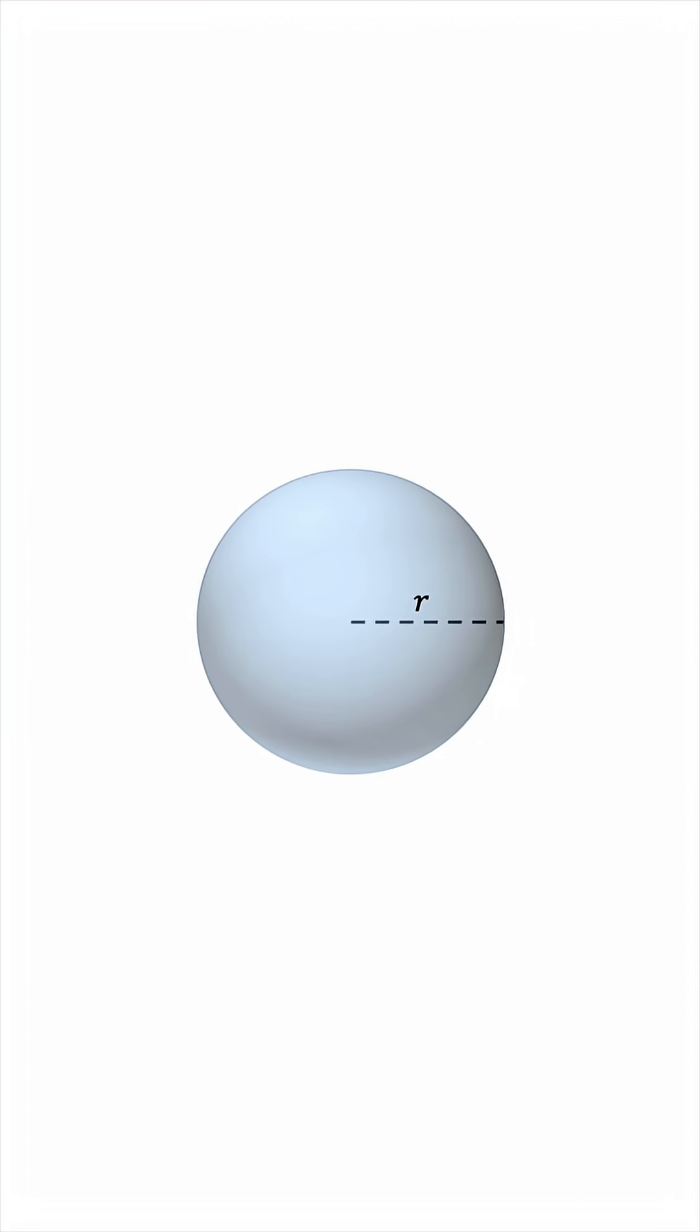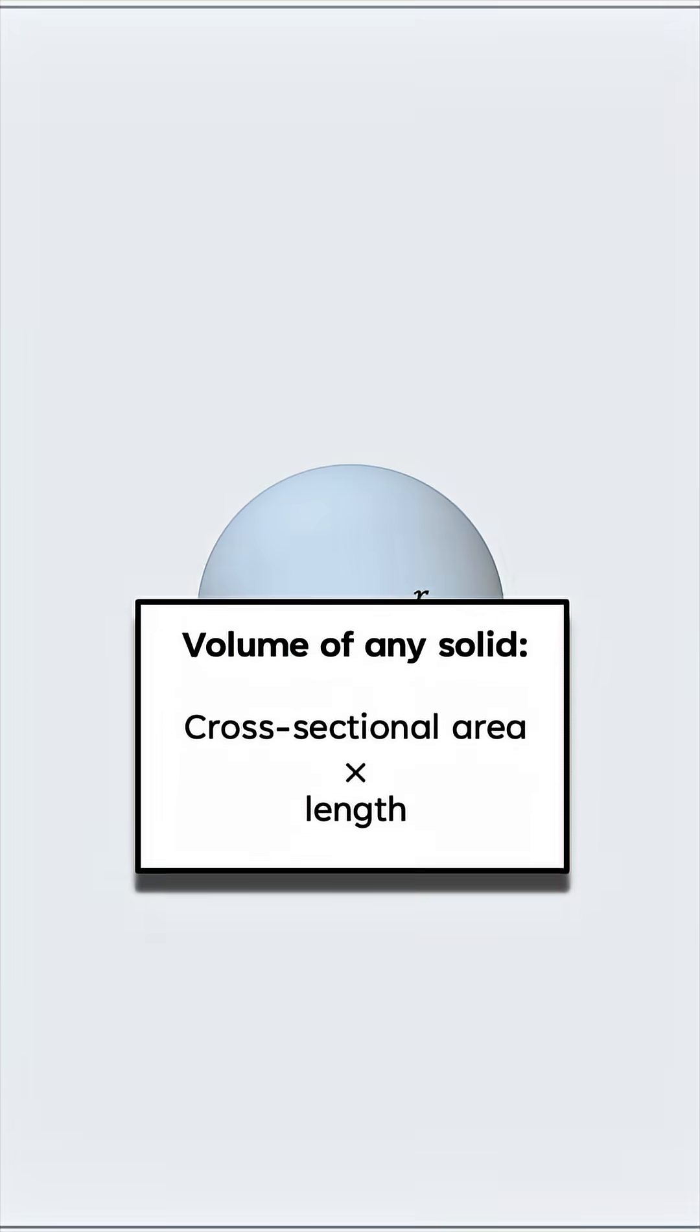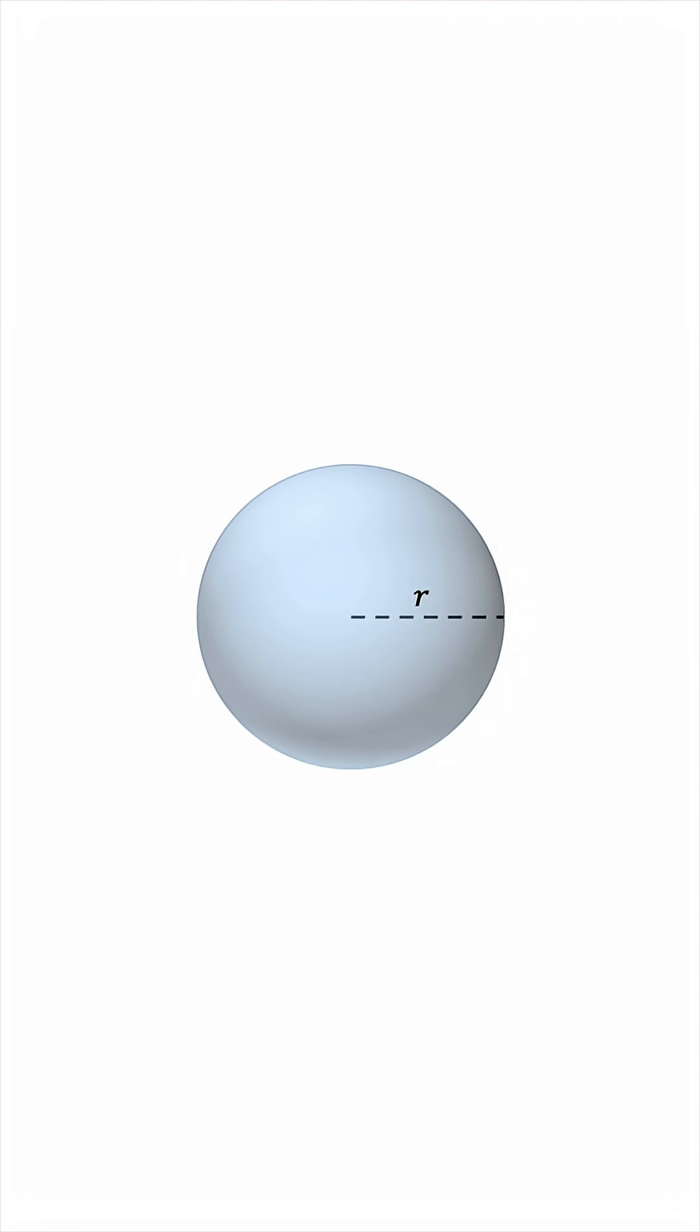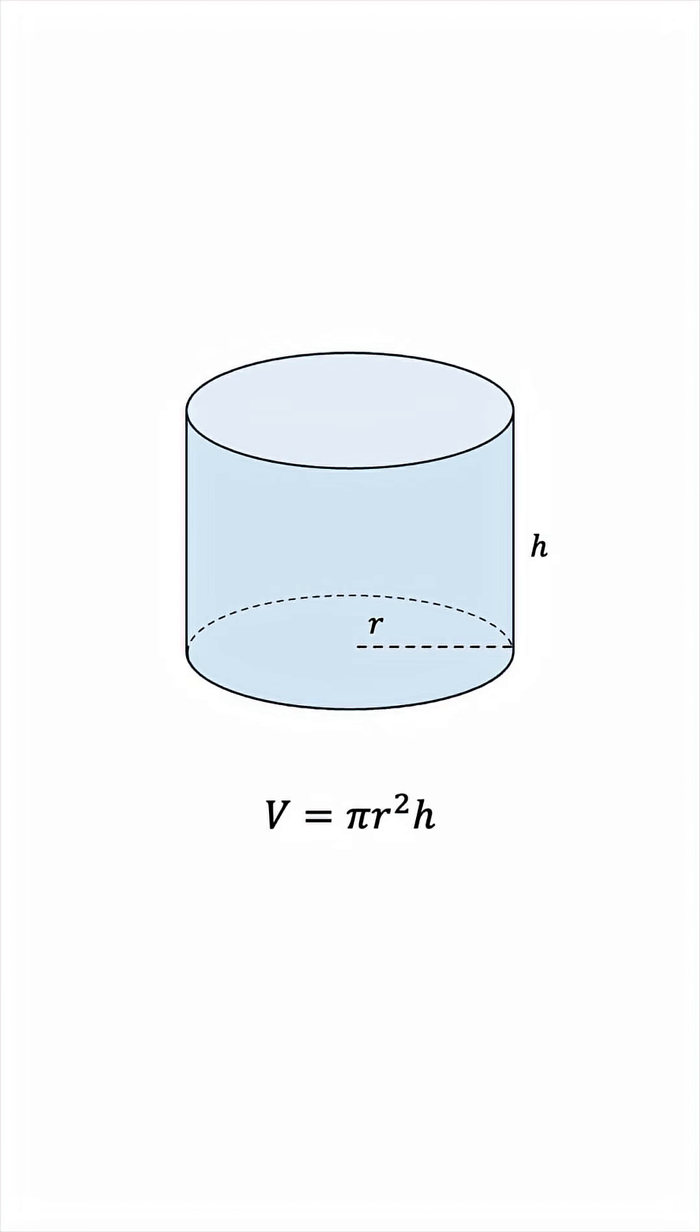In general, the volume of a solid is its cross-sectional area times its length. For example, if we have a cylinder, the cross-section is a circle, so the volume is pi r squared h.